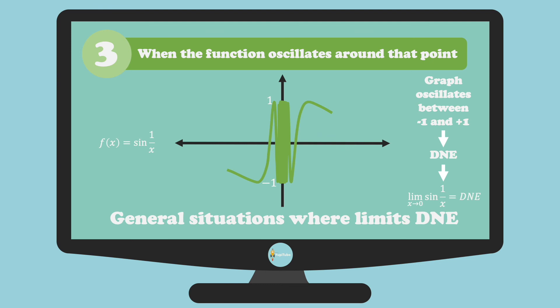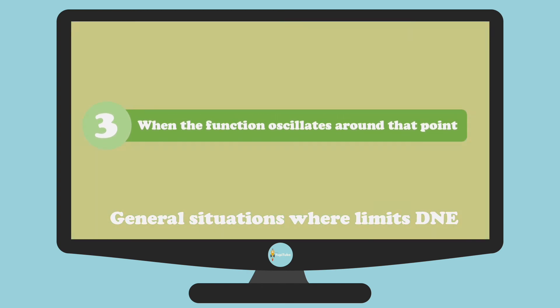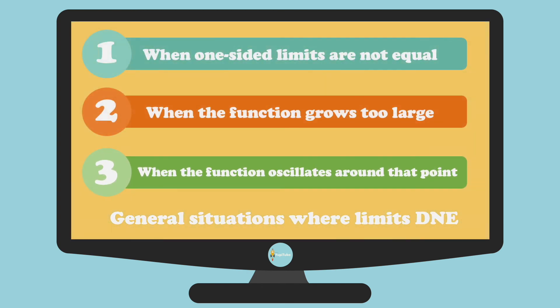And there you have it, study buds! Those are the three general cases where the limit of a function doesn't exist. Remember those three cases: the first, when one-sided limits are not equal.